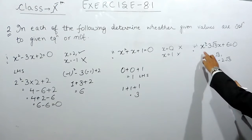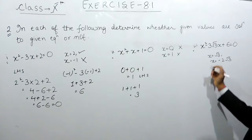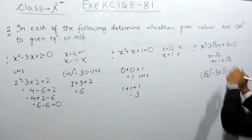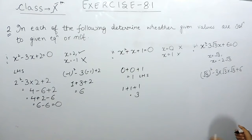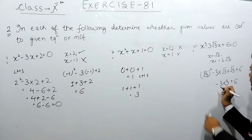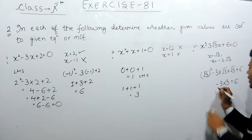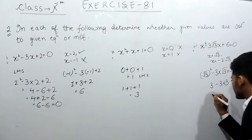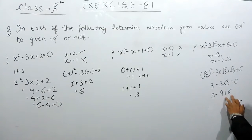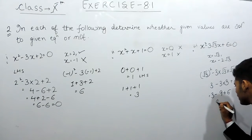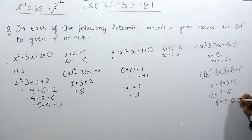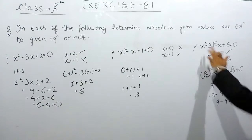Coming to part 3, we will first keep x equals to root 3. It will be the square of root 3 minus 3 multiplied by root 3 multiplied by root 3 plus 6. Root 3 multiplied by root 3 gives us 3, so we have 3 minus 3 into 3 plus 6, which is 3 minus 9 plus 6. Please don't make the mistake of adding 9 and 6 first. We add 6 plus 3 to get 9, and 9 minus 9 equals 0. This 0 equals the right hand side, which is also 0, so root 3 is a root of this quadratic equation.